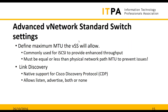You can define the maximum MTU that a virtual switch will allow — this is commonly used for iSCSI to provide enhanced throughput using jumbo frames, which allow you to carry more payload for each header and footer on a frame. The MTU must be equal to or less than the physical network path MTU to prevent issues — if you set a larger MTU at the endpoint than the entire network path between source and destination can pass, you will end up with problems.